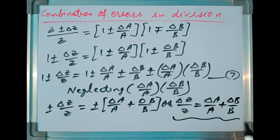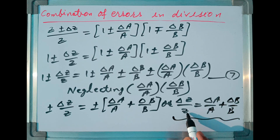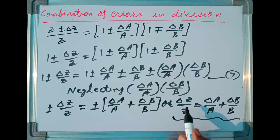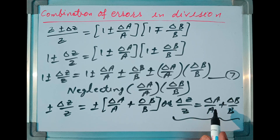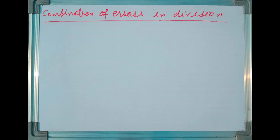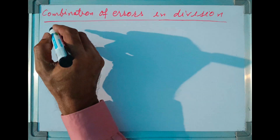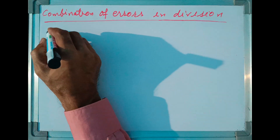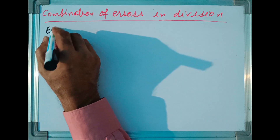Hence the proof for the rule of combination of errors when we divide two quantities — that is, the relative error in the result is equal to the relative error in the first quantity plus the relative error in the second quantity. In order to have more understanding about this rule, let me share an example.